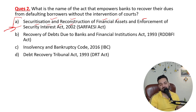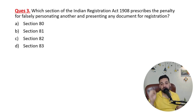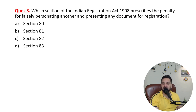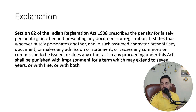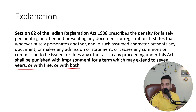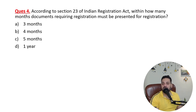Which section of the Indian Registration Act 1908 prescribes a penalty for falsely impersonating another person and presenting any document for registration? This is covered under Section 82 of the Indian Registration Act. The penalty can be an imprisonment of seven years, or a fine, or both.